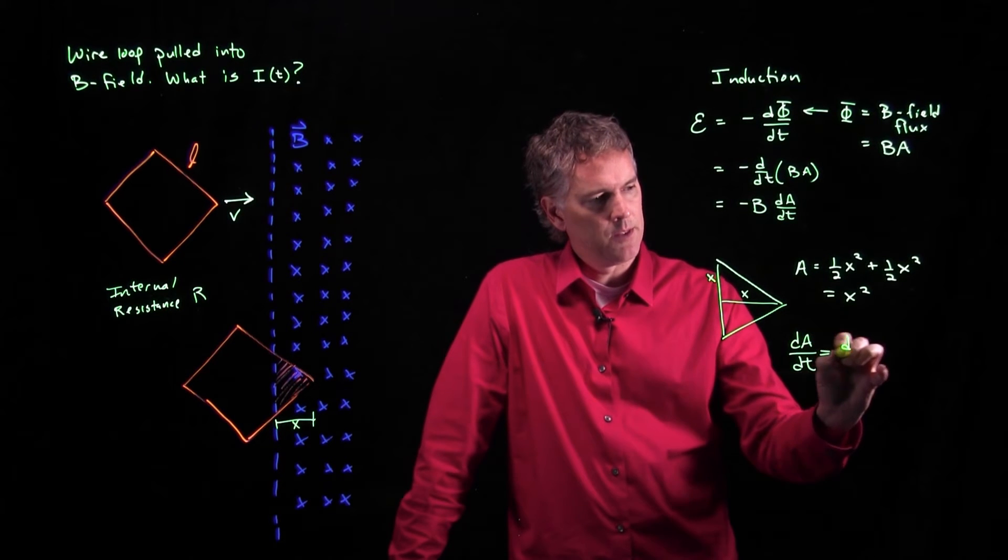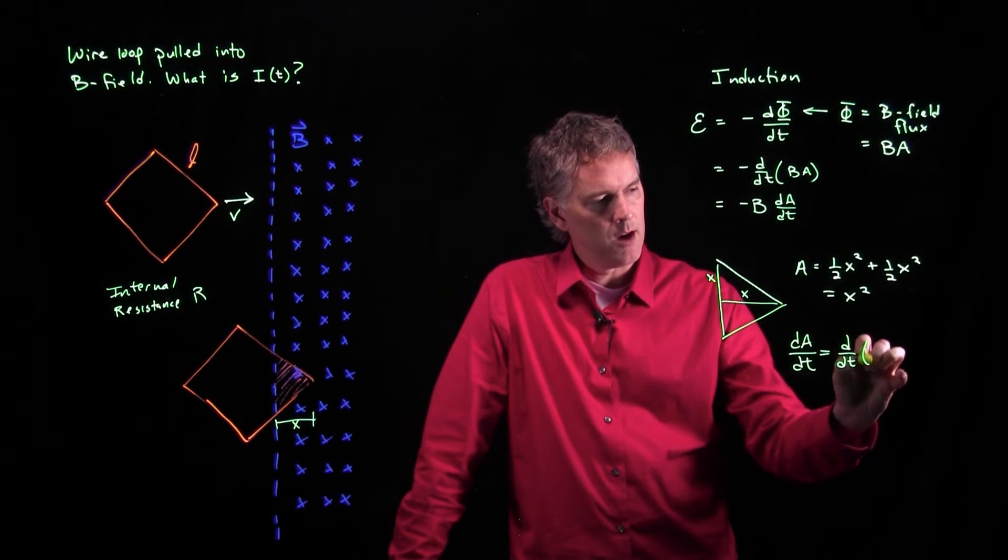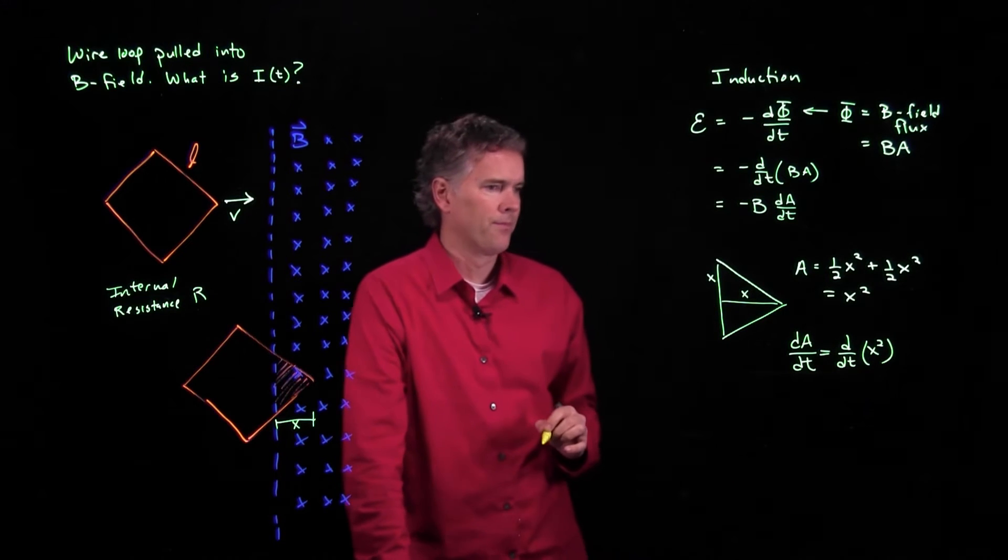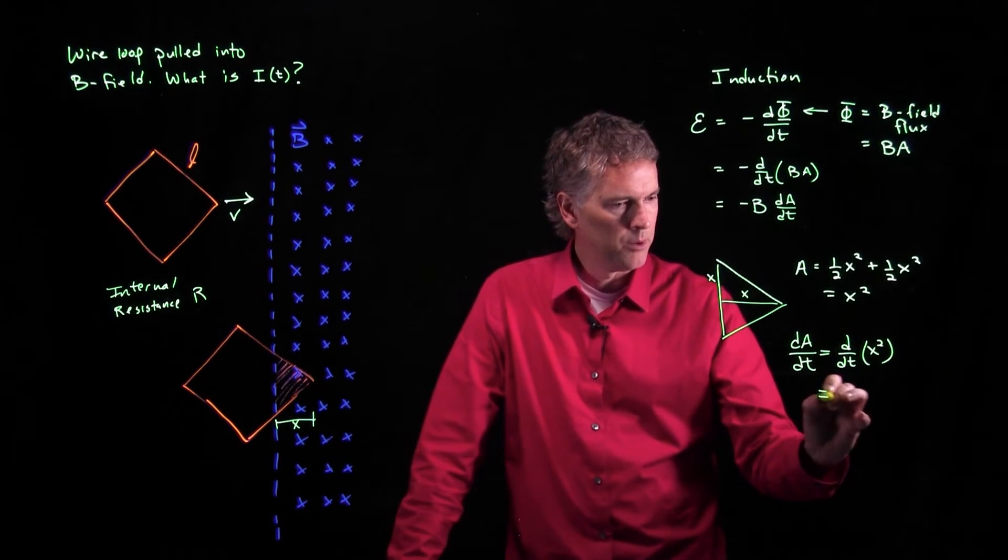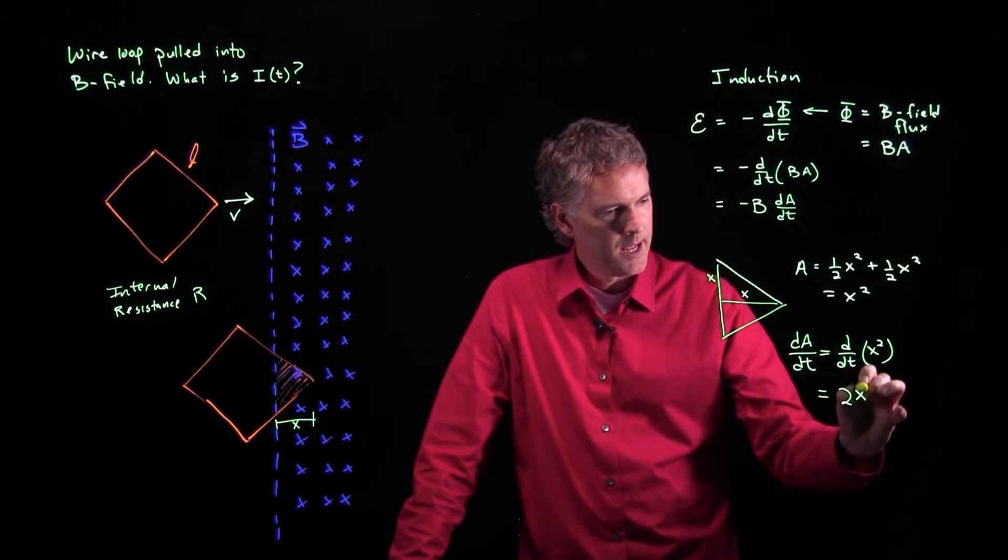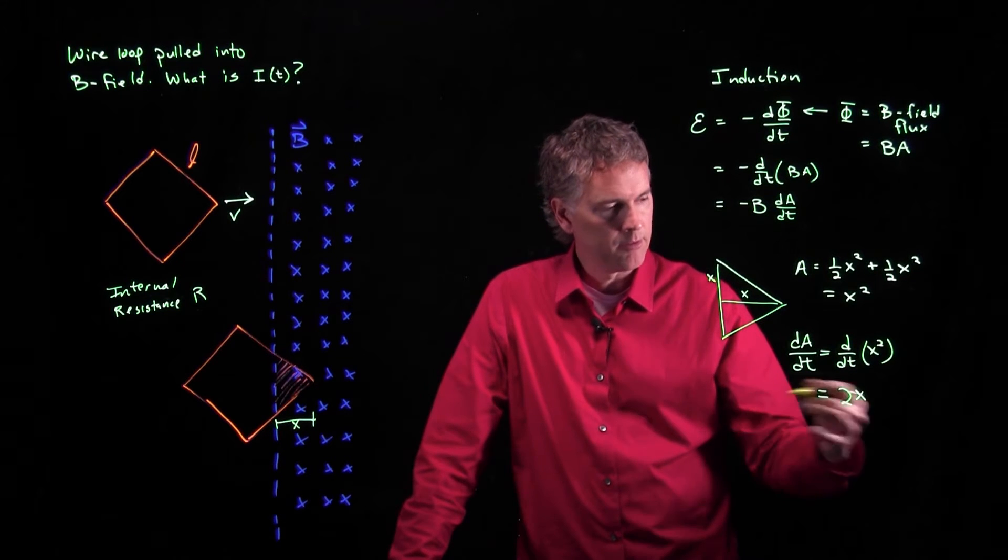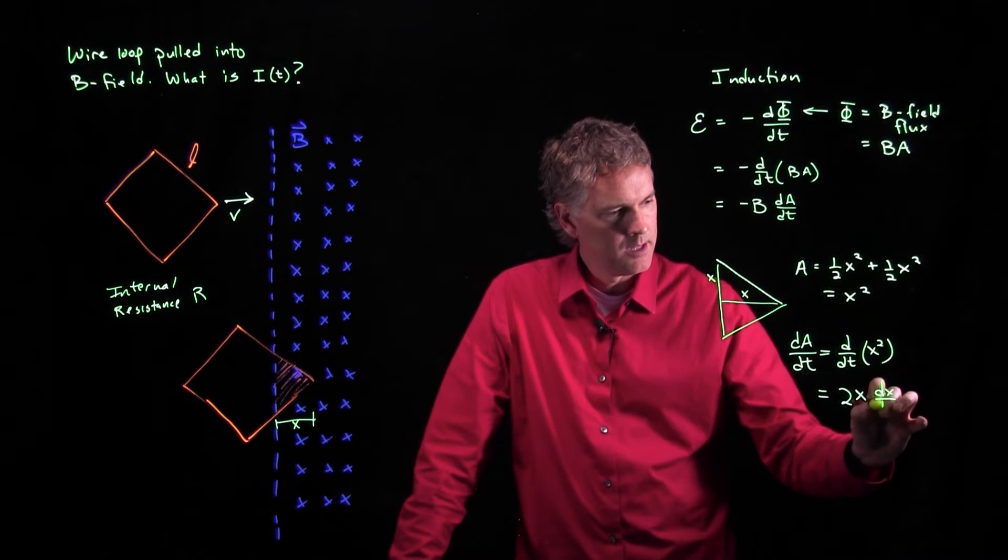What if I do a derivative of that area? So I want to take the time derivative of x squared. What do I get? Well, I pull down a 2, I get an x, but I have to remember that x is a function of time, and so I get dx dt.